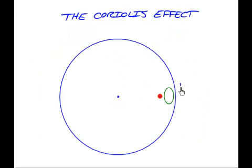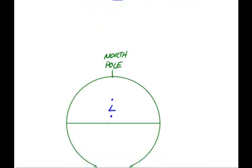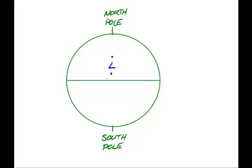If, on the other hand, the turntable is turning clockwise, then from your perspective you are turning to the left, and the ball will appear to curve to the left. Now, the Coriolis effect is often brought up in discussions of meteorology, that is, weather systems. Specifically, hurricanes, typhoons, or cyclones — these are all different words for the same thing. All of those words refer to very strong, low-pressure systems on the Earth.